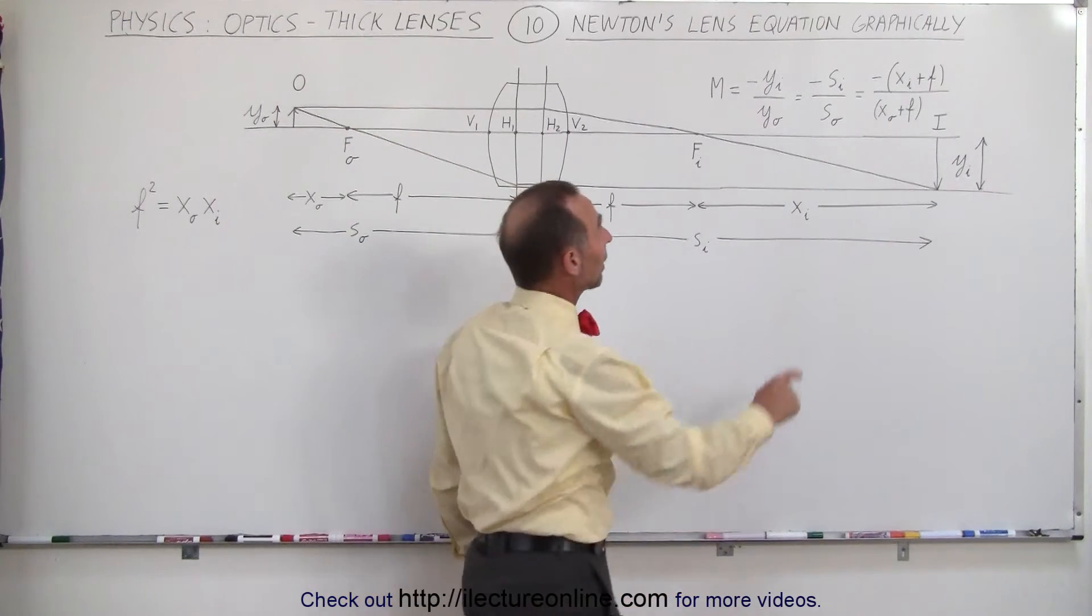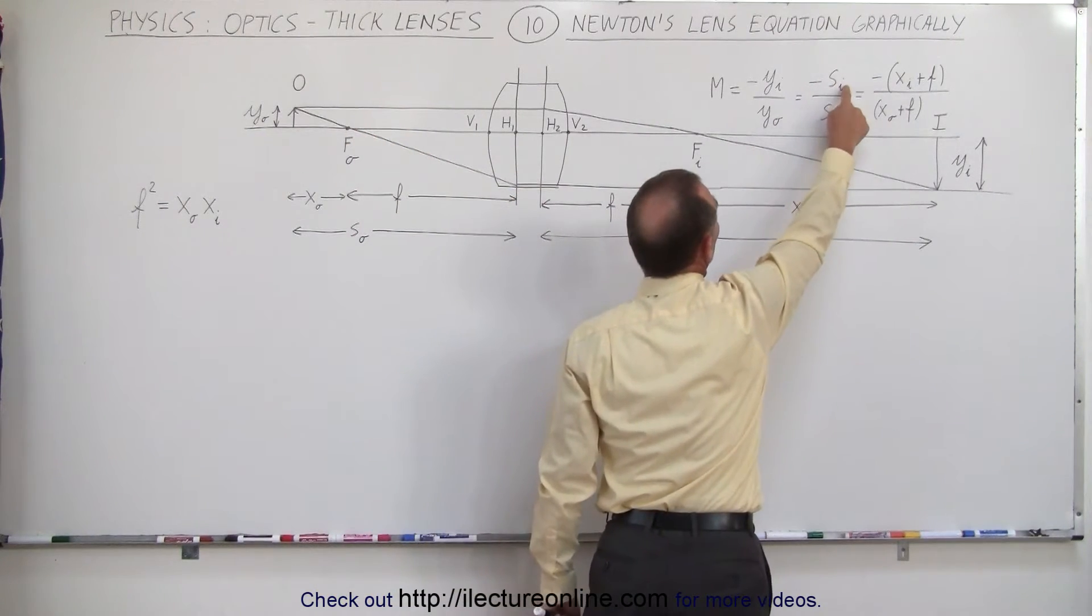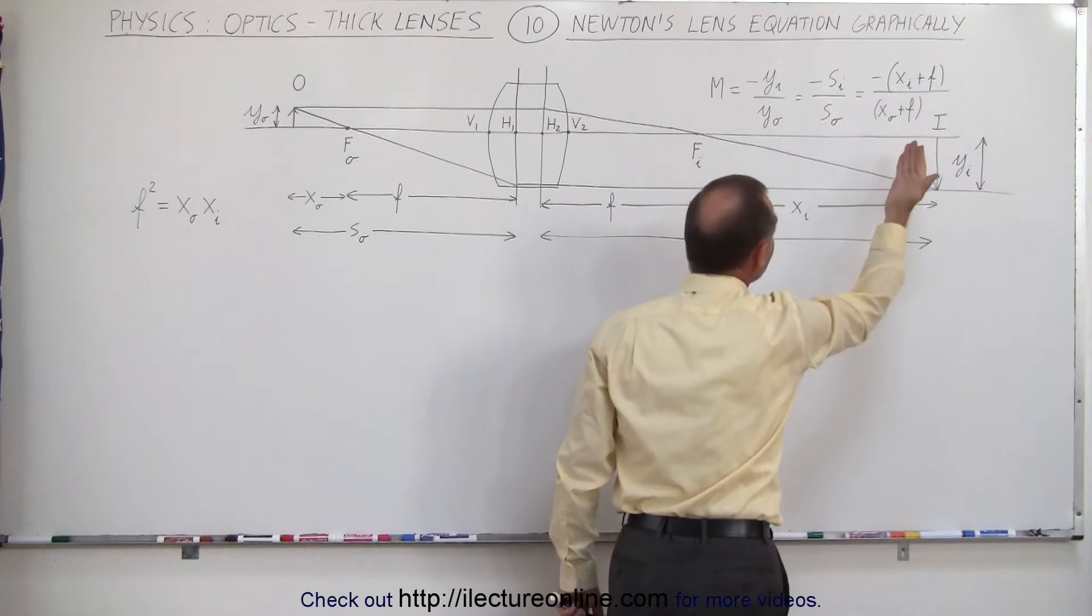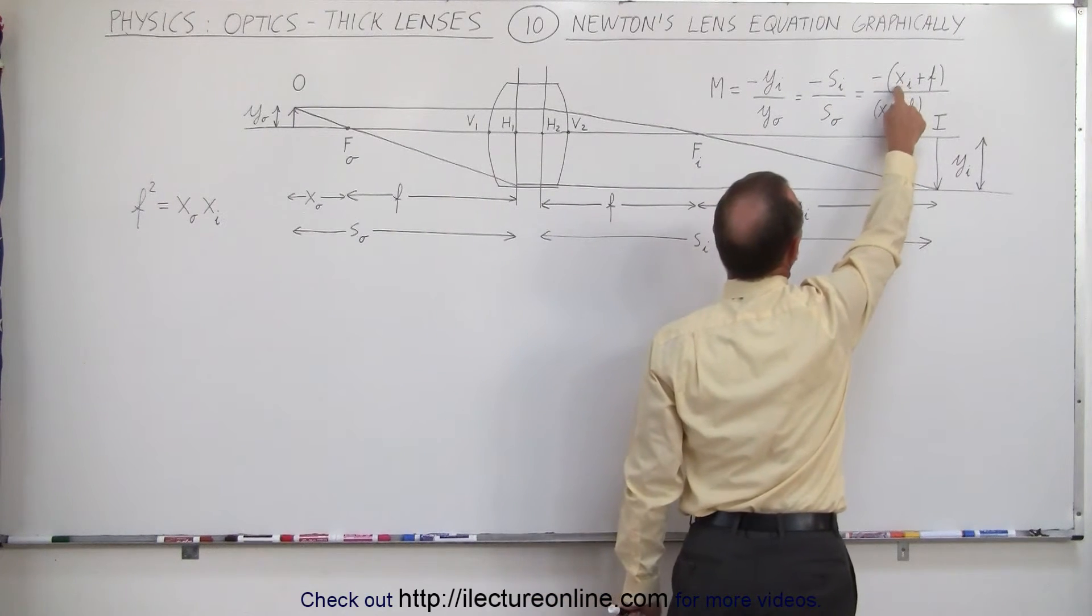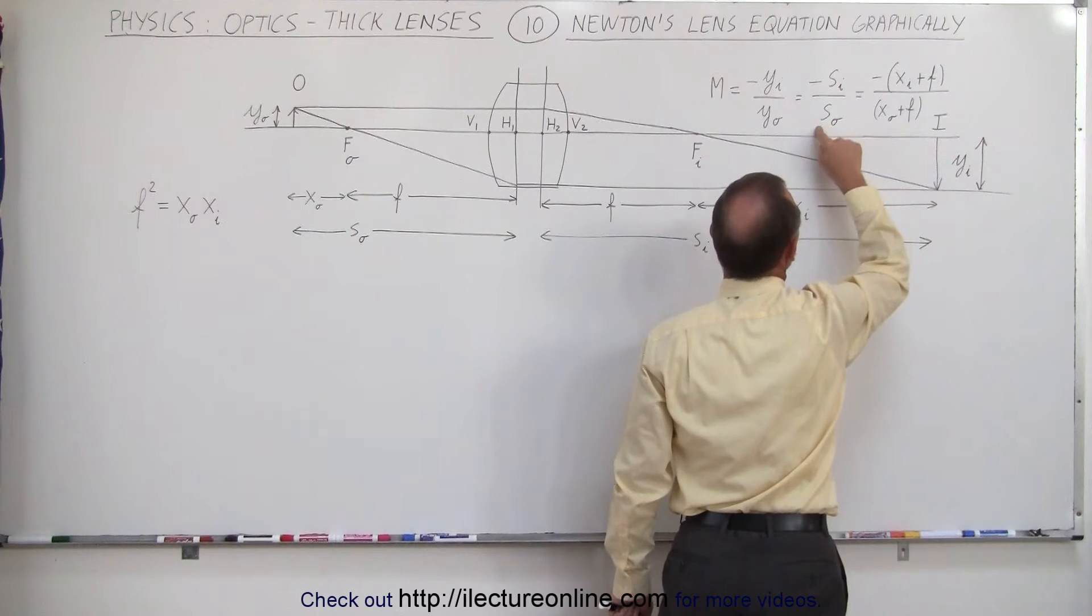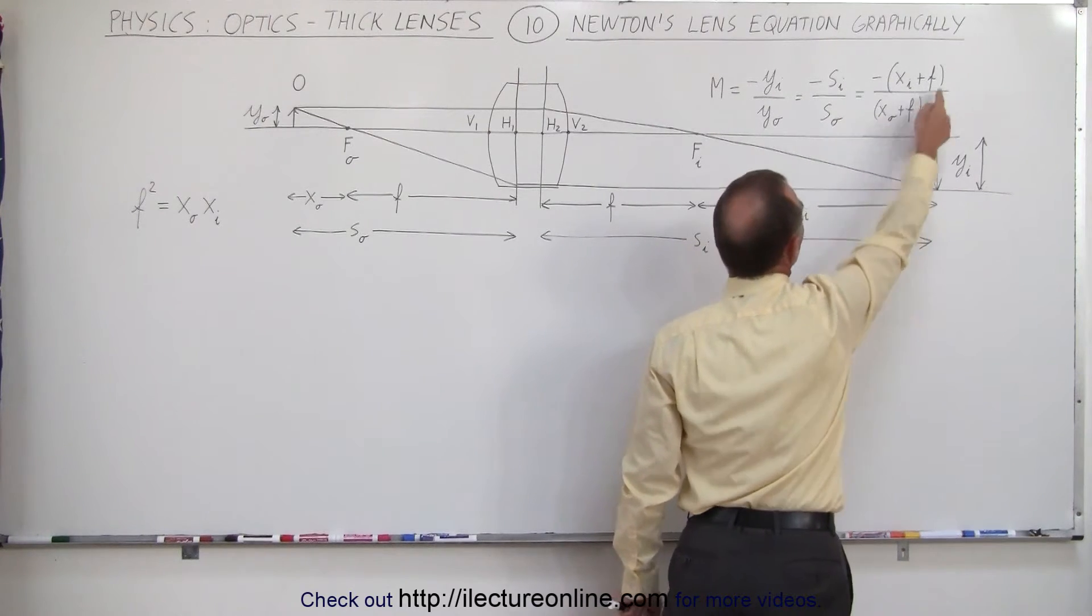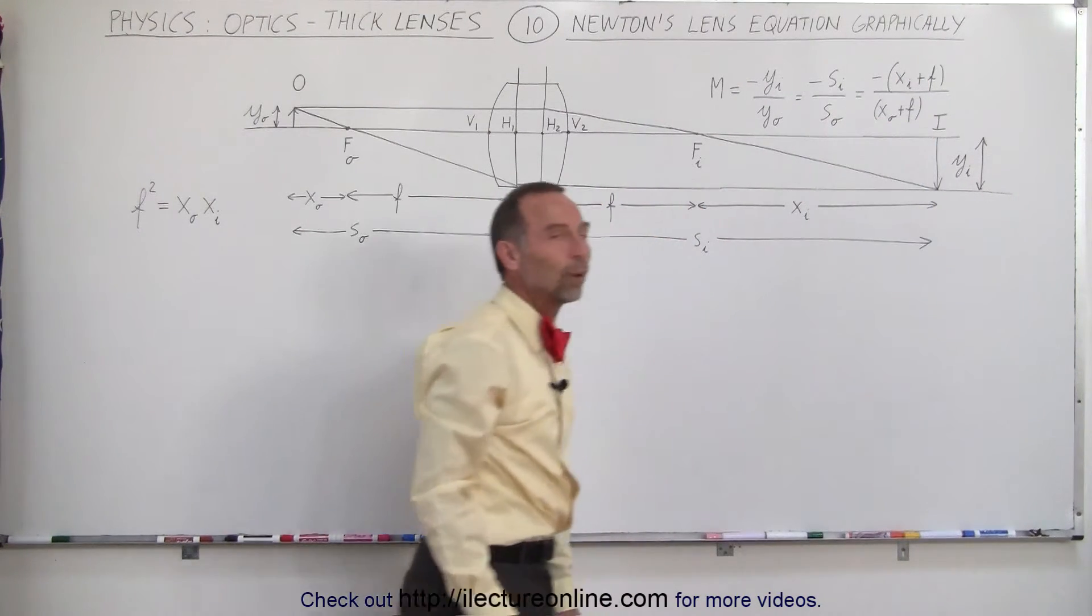It can also be written as the negative of the image distance over the object distance. Since the image distance is x sub i plus the focal length and the object distance is x sub O plus the focal length, it can be written as that as well.